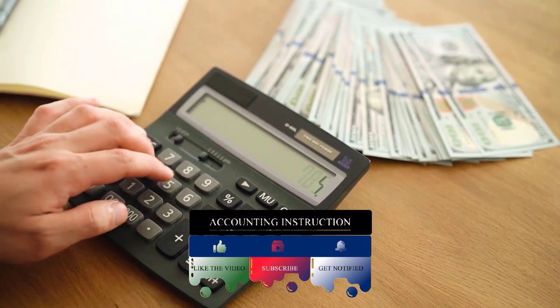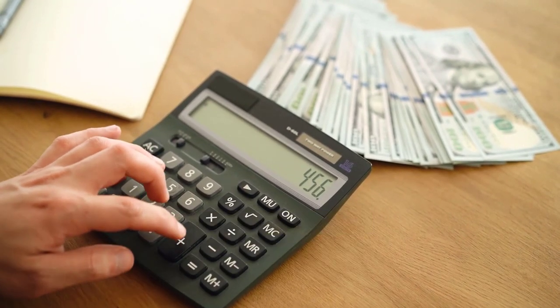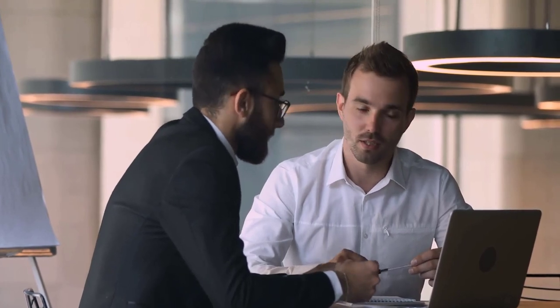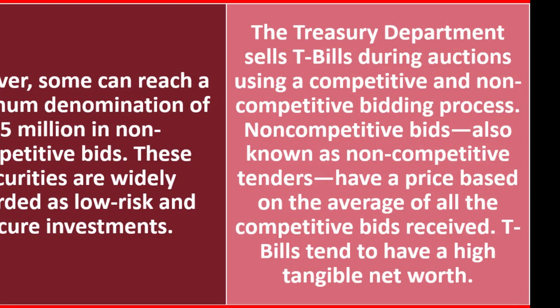They're backed by the government. So unless the government were to default, which would be a big problem in any case, they would be able to secure their debts. And of course they have the printing press. The Treasury Department sells T-bills during auctions using a competitive and non-competitive bidding process. Non-competitive bids, also known as non-competitive tenders, have a price based on the average of all the competitive bids received.